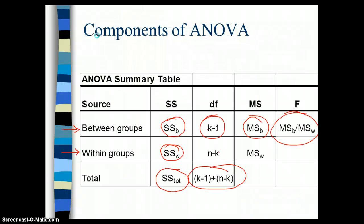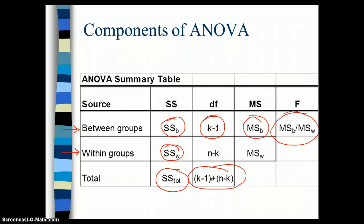This is the summary table. Remember, we talked about sum of squares between, sum of squares within, and sum of squares total — k minus 1, n minus k, and then the total. Mean squares between and mean squares within, and then the ratio.